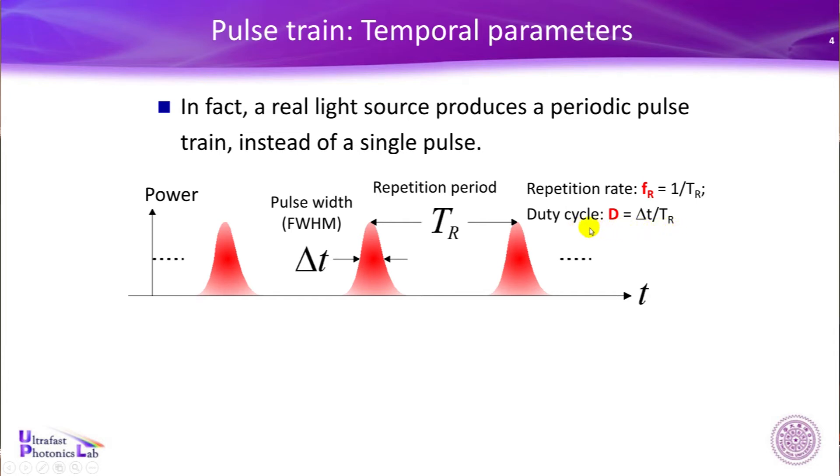So you can define another term, duty cycle, which is Δt over TR. Δt is here, TR is here. You can easily know the duty cycle D is always less than 1 because Δt is always less than TR. So what does this mean? It means, roughly speaking, the percentage of time in which there is laser energy. The smaller the duty cycle, the smaller percentage that you can harvest energy. Any question? No? Good.